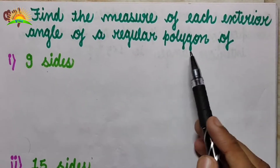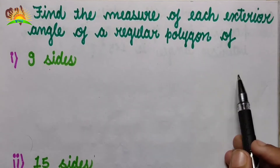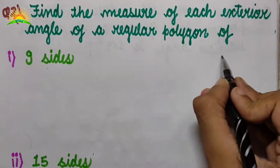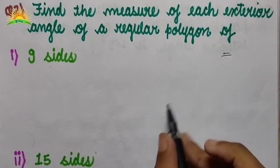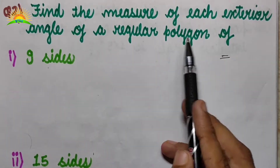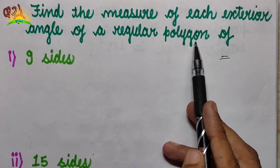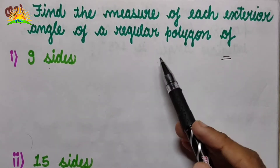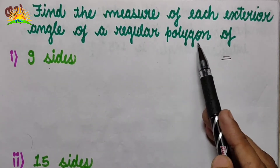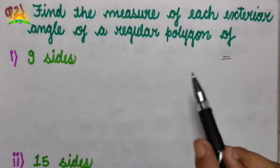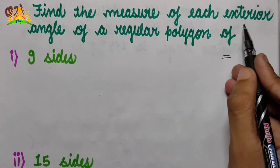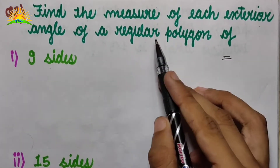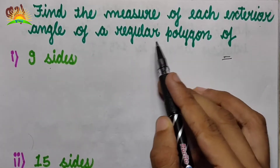A regular polygon means that all sides and all angles are equal. So we have a regular polygon with 9 sides and 15 sides, and we have to find the exterior angle of each.